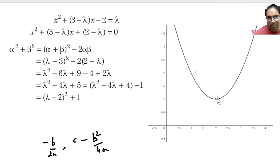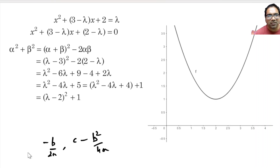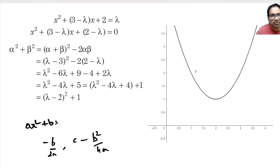Every parabola has something called a vertex — the lowest point if it is facing upwards, or the highest point if it is facing downwards. We know the coordinates of the vertex. The x-coordinate of the vertex is minus b by 2a, and the y-coordinate is c minus b squared by 4a. Equivalently, you can substitute minus b by 2a into the equation ax squared plus bx plus c to get the y-coordinate.